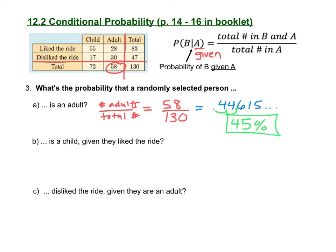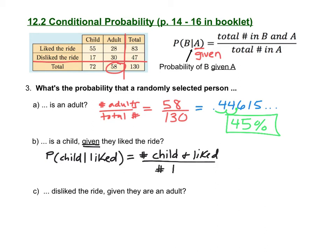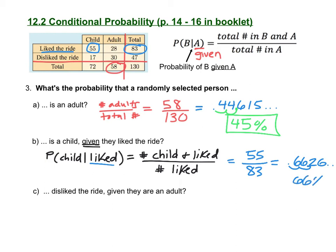Next: what is the probability that a randomly selected person is a child given they liked the ride? This is now conditional probability — we have the word 'given.' Using our formula, we need to take the number that are both child and liked the ride, divided by the total number that liked the ride. We always divide by the given. There's a total of 83 people that liked the ride, and the number of children that liked the ride is 55. So 55 out of 83 is our conditional probability. Dividing on the calculator gives 0.6626, which is 66 percent rounded to the nearest percent.